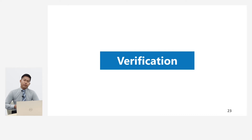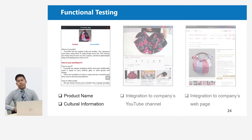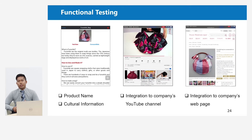The next step is the verification, which includes three parts: functional testing, performance testing, and user verification. The functional testing was done at the retail store. All functions of identifying products, providing information, and integration with YouTube and the company webpage worked successfully.